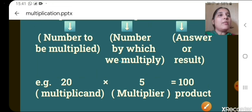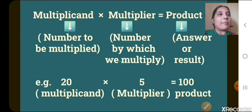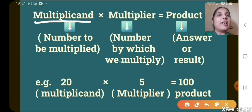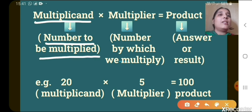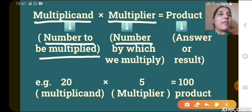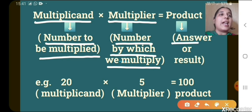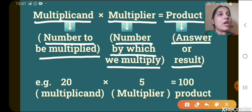So children, before we proceed further in this chapter on multiplication, you should know a few terms. The first one is multiplicand — multiplicand is the number to be multiplied. Then multiplier — multiplier is the number by which we multiply. And after multiplying, the answer or result that we get is called the product.